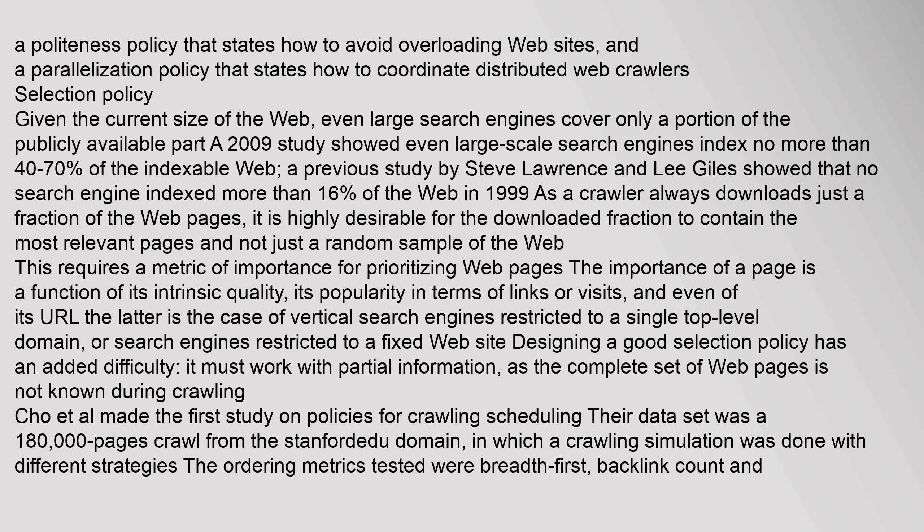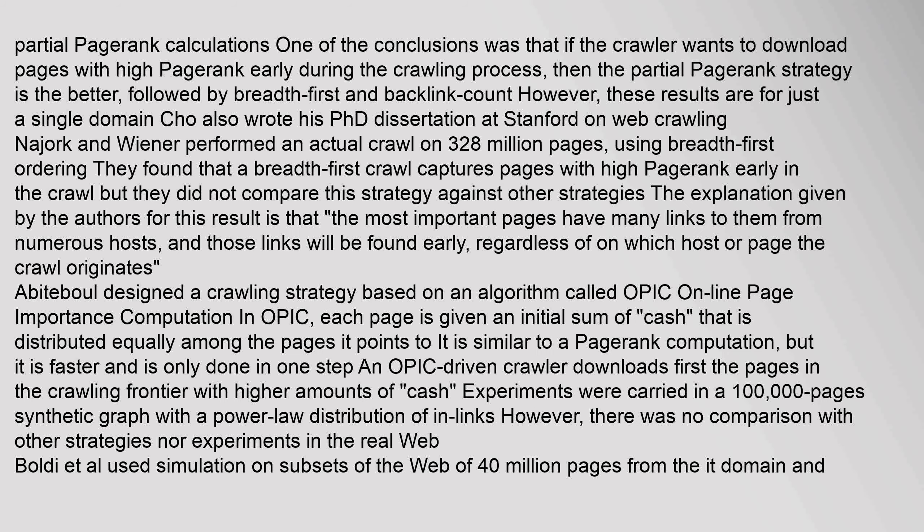Cho et al. made the first study on policies for crawling scheduling. Their data set was a 180,000-page crawl from the stanford.edu domain, in which a crawling simulation was done with different strategies. The ordering metrics tested were breadth first, backlink count, and partial page rank calculations. One conclusion was that if the crawler wants to download pages with high page rank early during the crawling process, the partial page rank strategy is better, followed by breadth first and backlink count. New York and Wiener performed an actual crawl on 328 million pages using breadth-first ordering, finding that breadth-first captures pages with high page rank early in the crawl. The most important pages have many links to them from numerous hosts, and those links will be found early regardless of which host or page the crawl originates from.